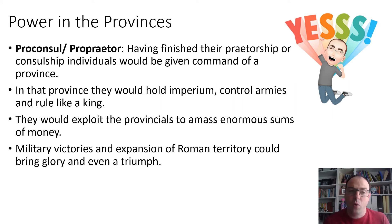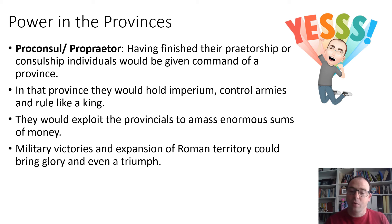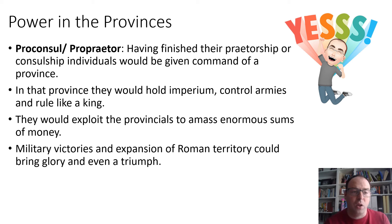The magistrates were largely concentrated in Rome, but power also existed in the provinces. Having been a consul or praetor, you could become pro-consul or pro-praetor. After finishing your consulship or praetorship you'd be given command of a province, where you held imperium, controlled armies, and ruled essentially like a king. Generally, pro-consuls and pro-praetors would exploit the provincials to amass enormous sums of money, which they would feed back into their political careers and to benefit their families and supporters. Military victories and expansion of Roman territory while pro-consul or pro-praetor would bring glory and wealth, and potentially the high honour of holding a triumph on returning to Rome — with celebrations, games, and parades.